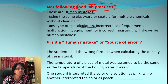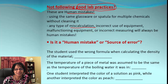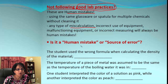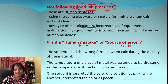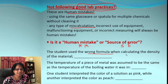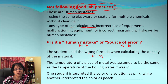Let's identify each example as a human mistake (HM) or source of error (SE). First: a student used the wrong formula when calculating the density of a material. It was the student who did not use the correct formula, so it is a human mistake. The student could go back, use the correct formula, and fix it.